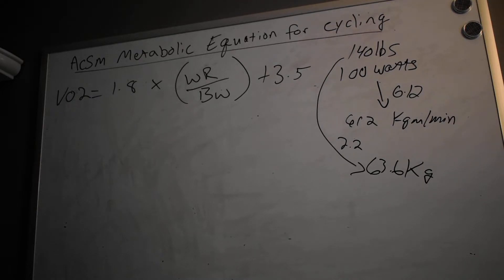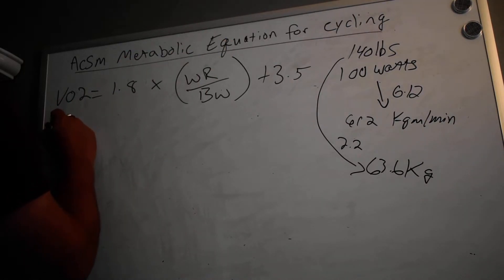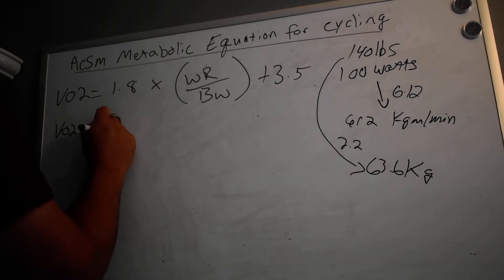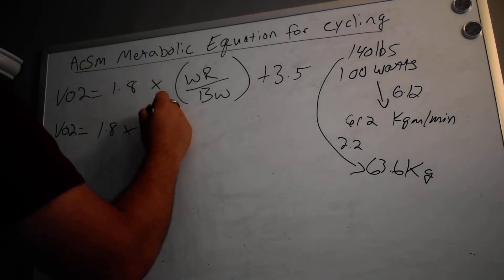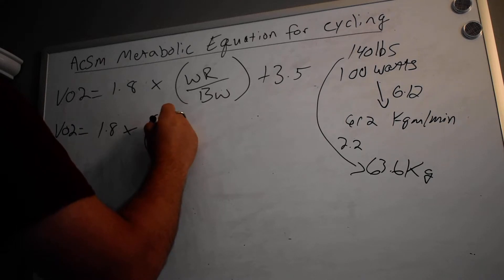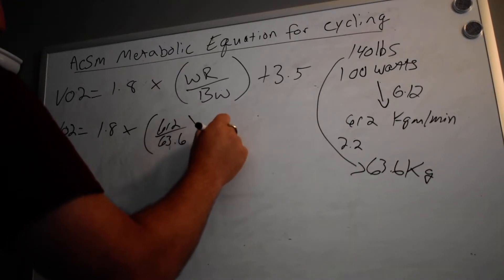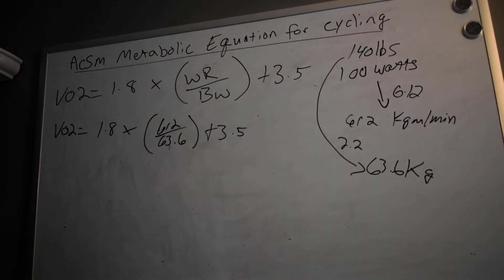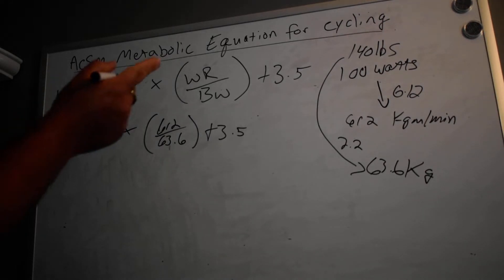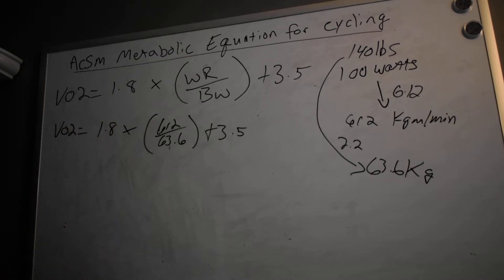Now that we have that information, we can simply rewrite our equation with all of our variables in there. 612 goes up here for work rate, 63.6, and then plus 3.5. Don't forget that 3.5 represents our resting VO2.